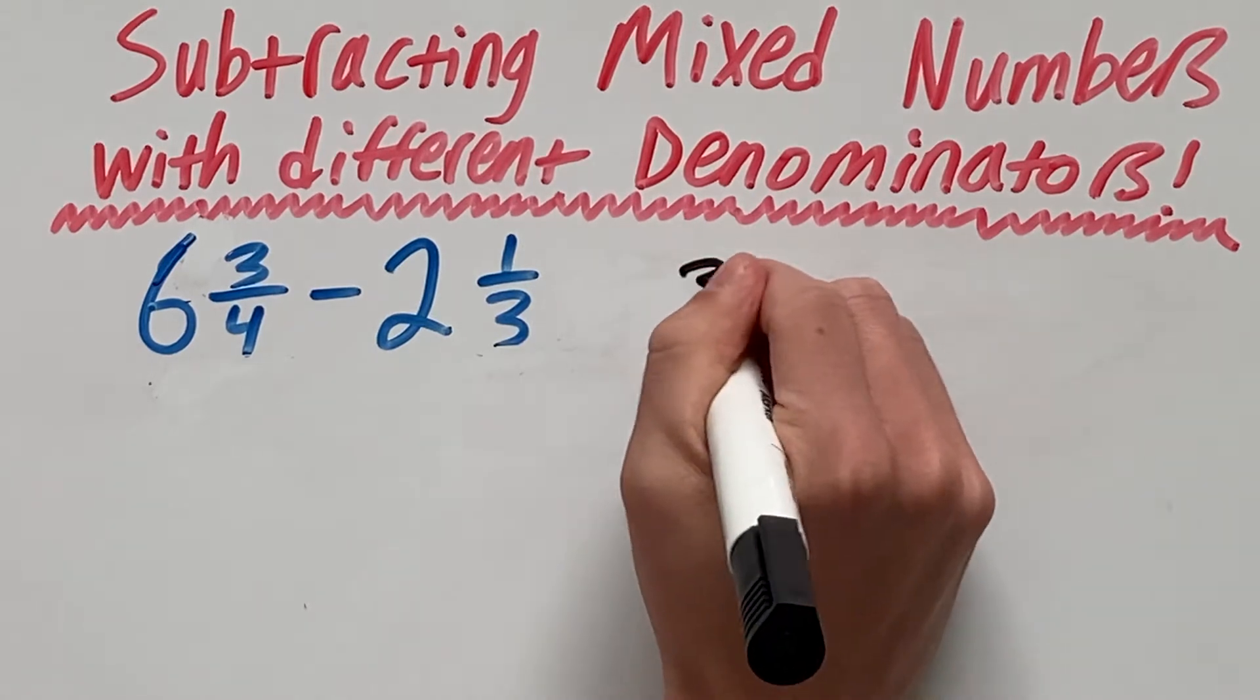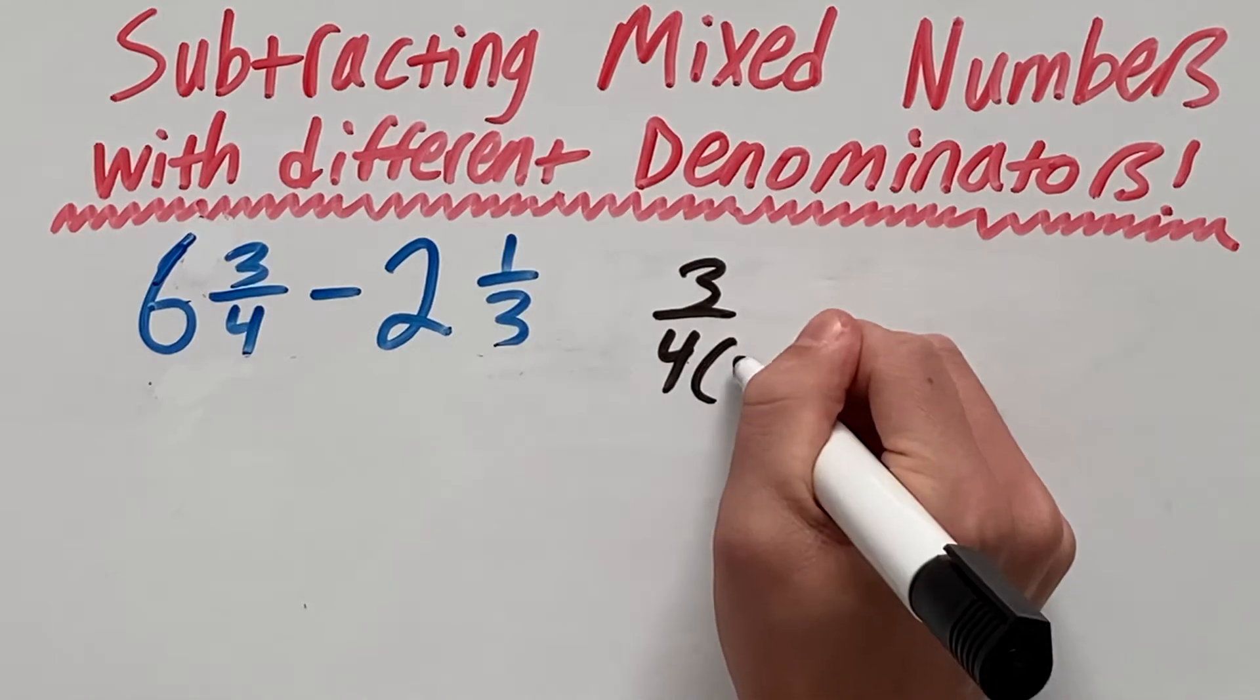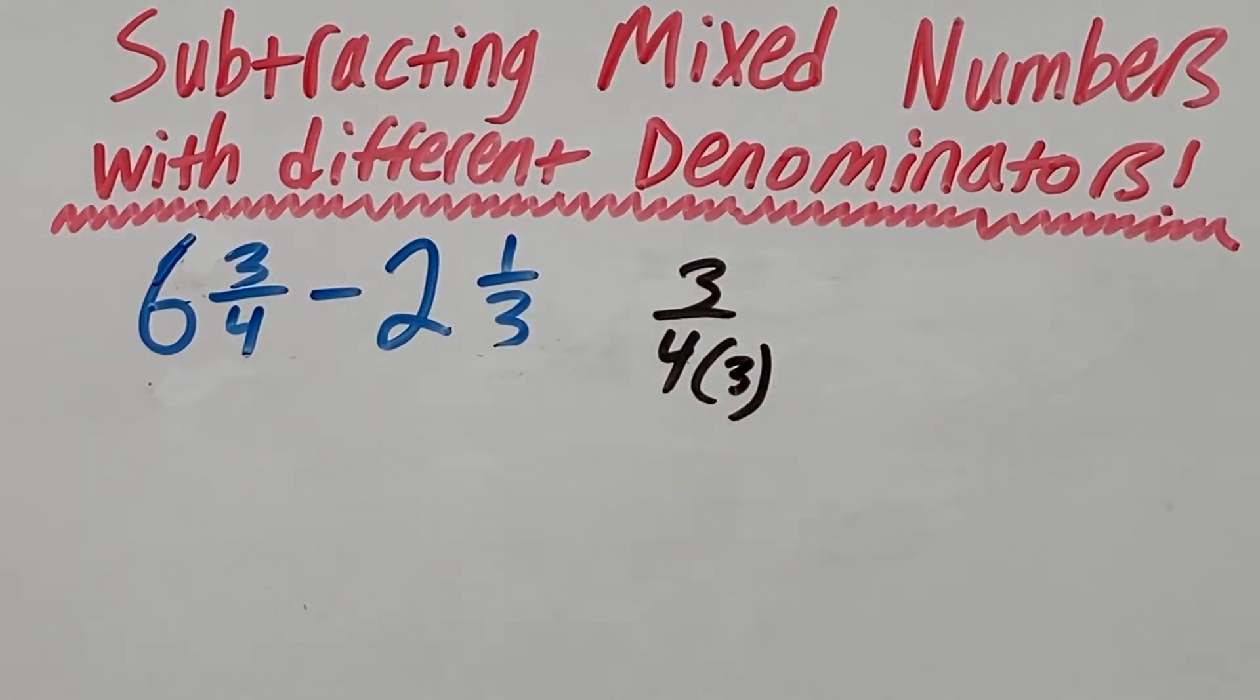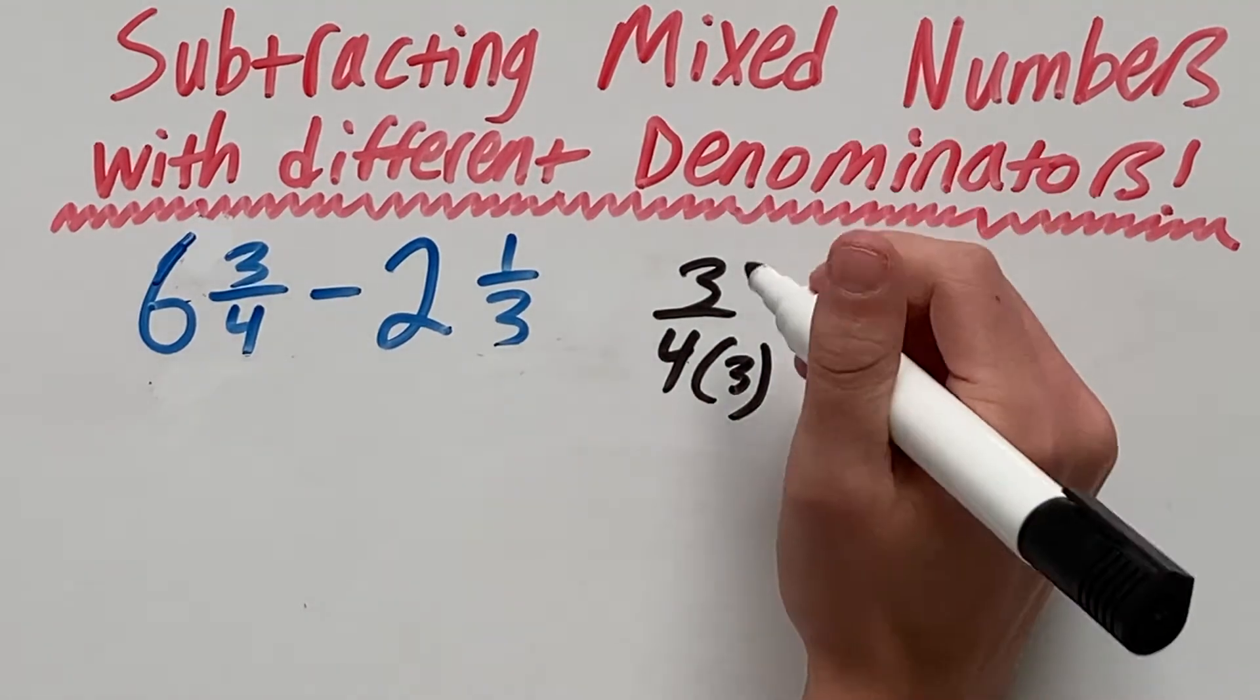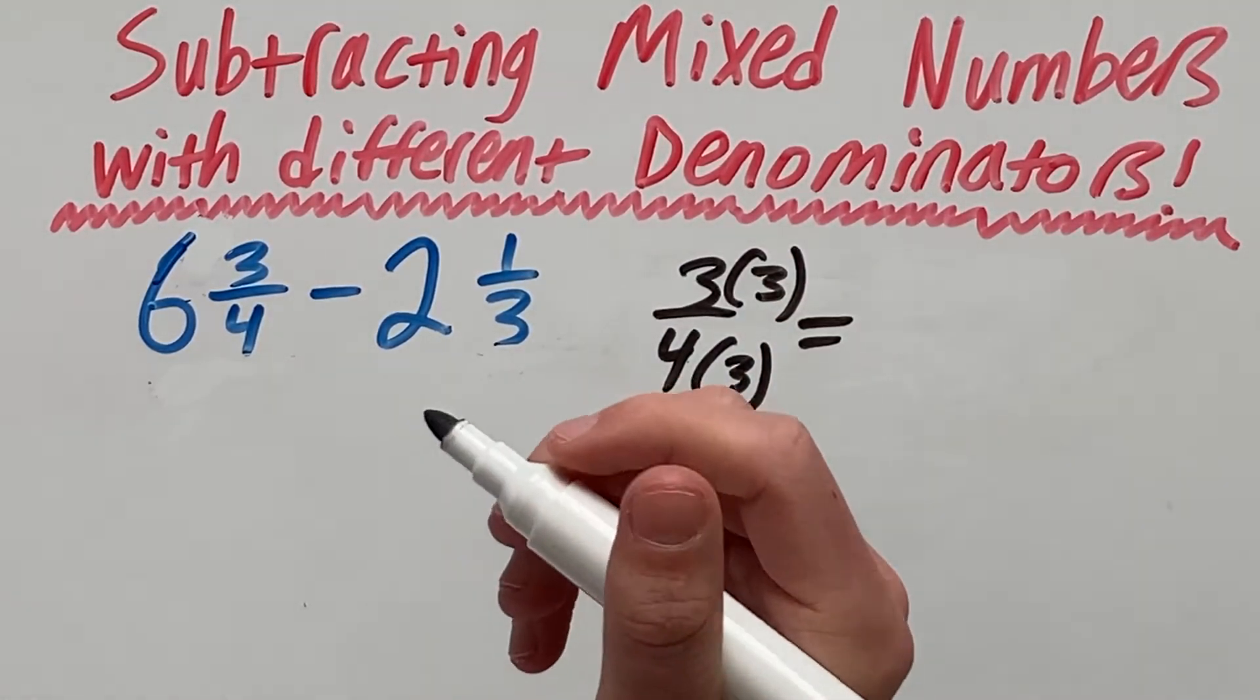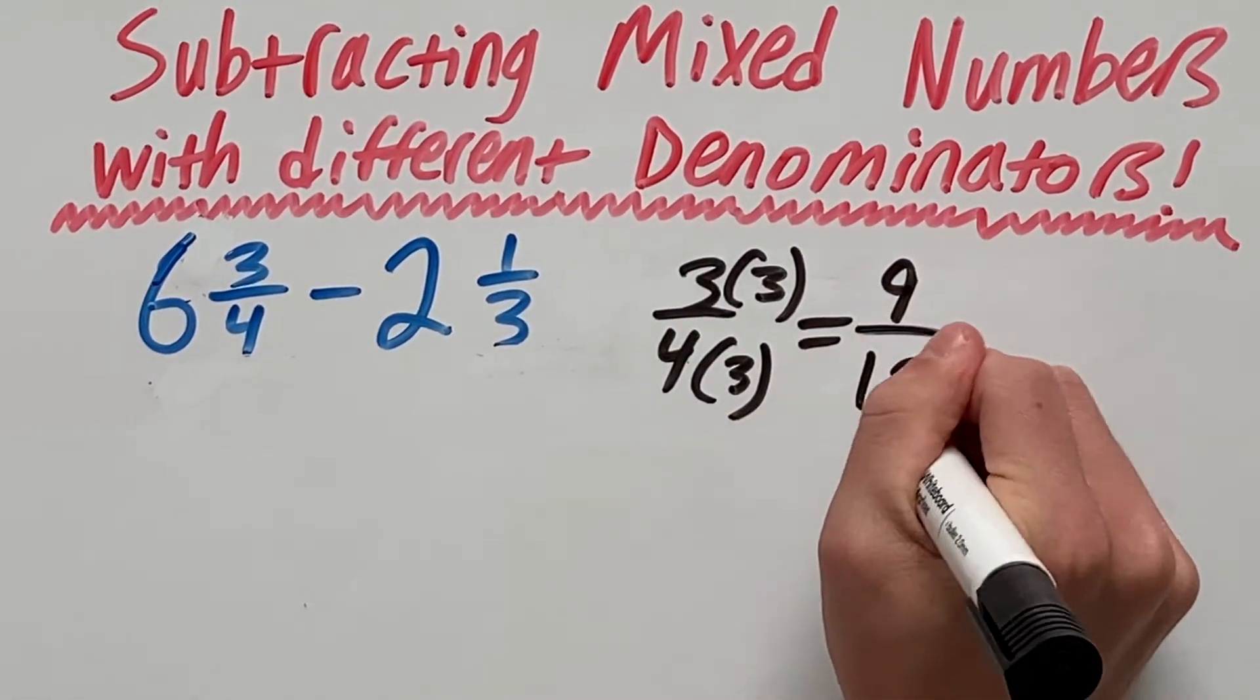So if we have 3 over 4, to get 12 on the bottom, we need to multiply 4 by 3. And whatever we do to the bottom, we also have to do to the top. So that will give us a new fraction of 9, since 3 times 3 is 9 over 12.